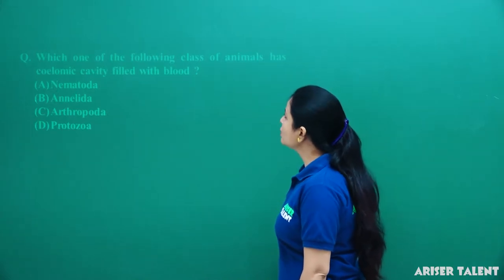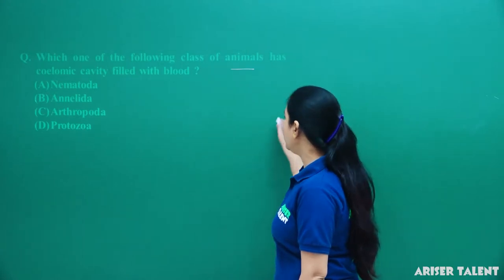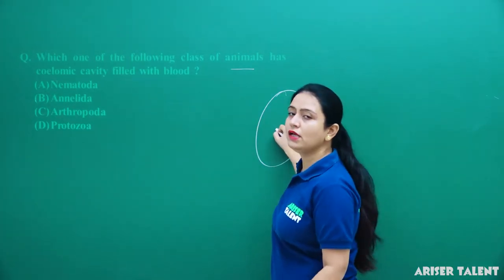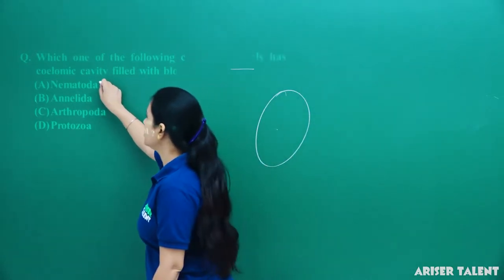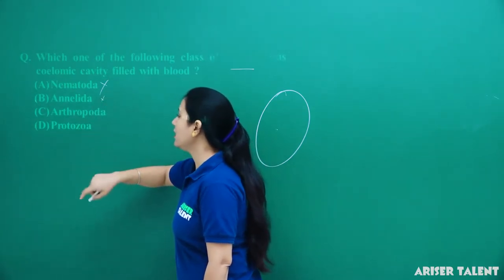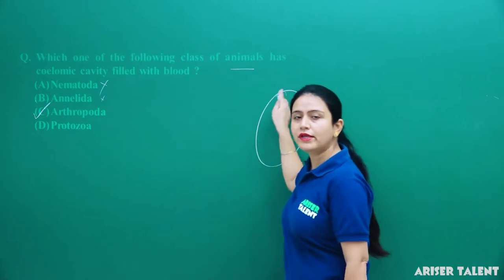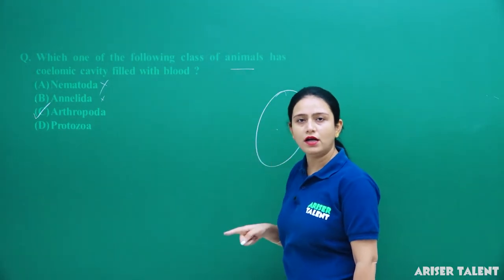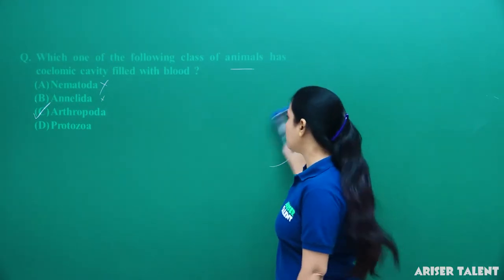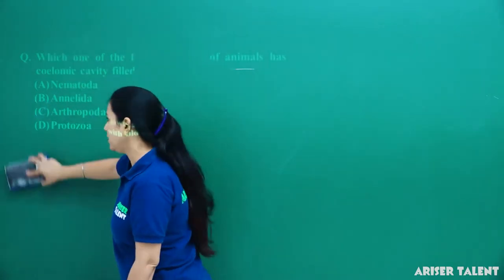Next, which class of animals has a coelomic cavity filled with blood? The coelomic cavity is filled with blood only in the Arthropoda group. Nematodes do not have a coelomic cavity filled with blood, and neither do Annelida. The coelomic cavity is filled with blood only in Arthropods. Option C is the correct answer.